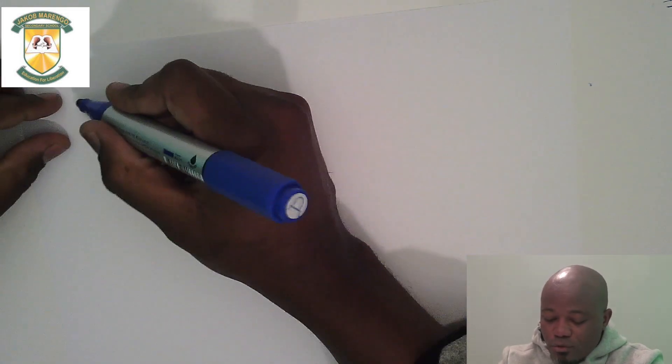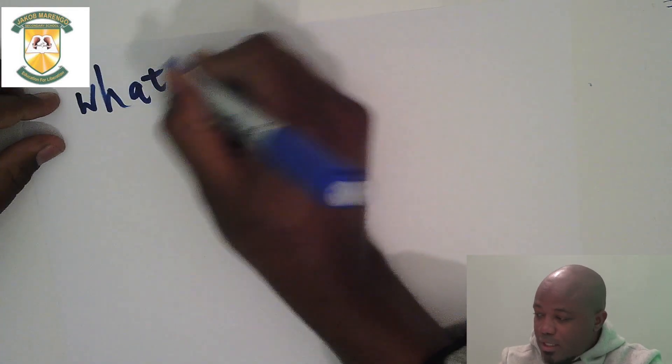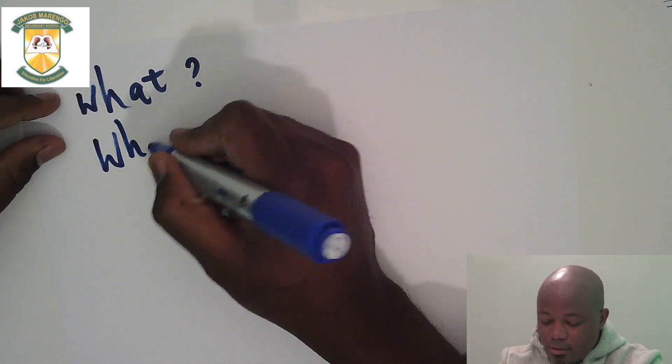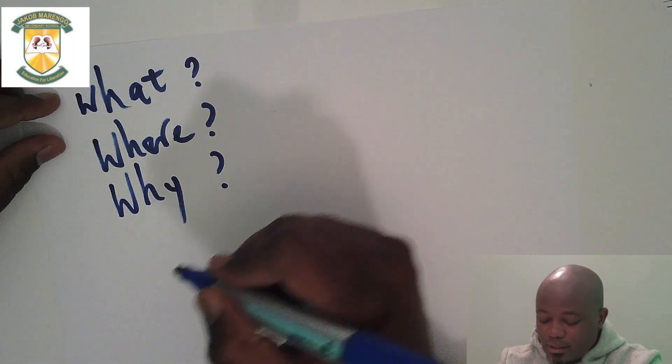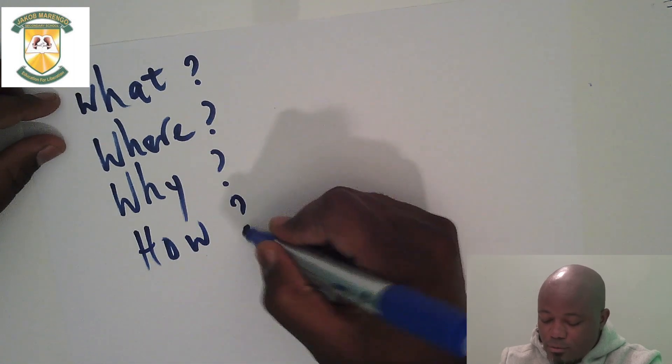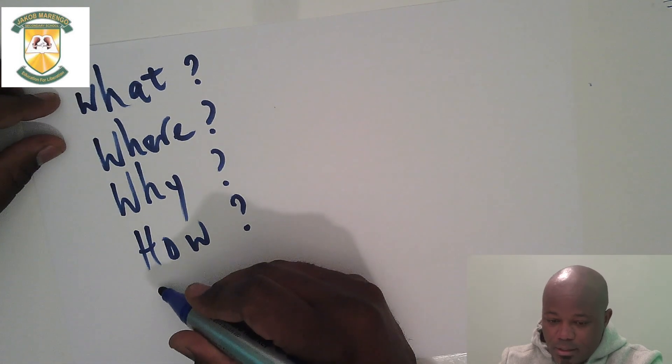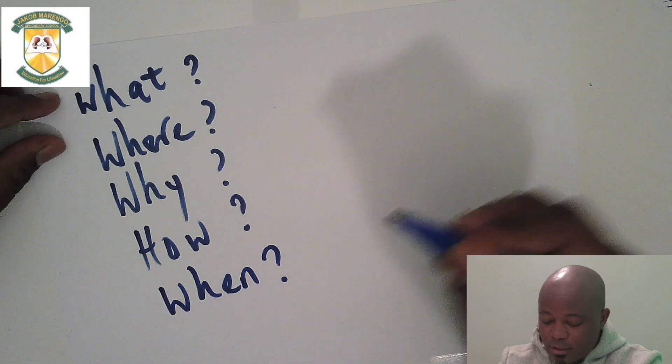For us to write a report, we need to follow some hints. We need to stick to the facts and also answer the WH questions. The WH questions are: who, what, where, when, why, and how. In other words, we need to know what happened, where did it happen, why did it happen, how did it happen, and when did it happen.